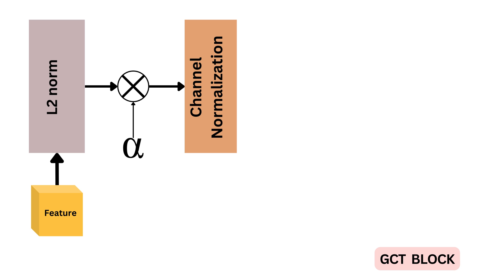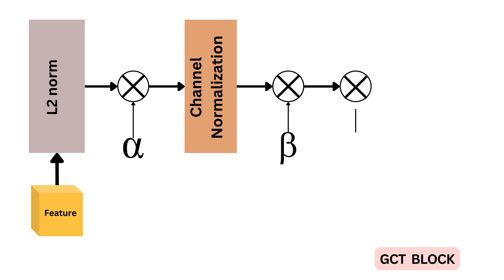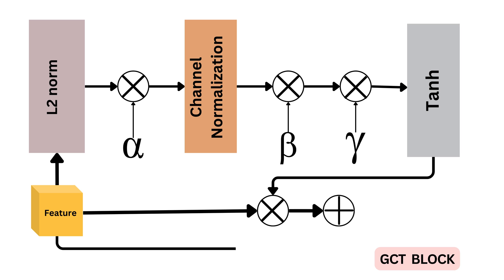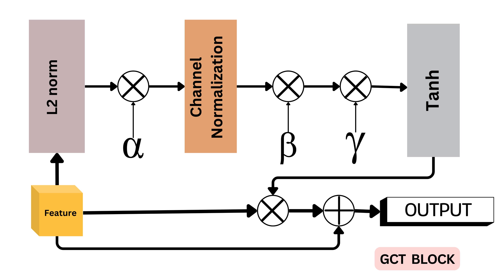In line with common normalization practices, GCT incorporates a learnable scale parameter gamma and bias beta to rescale the normalization. Notably, GCT sets itself apart by utilizing tanh activation to govern the attention vector, adding a nuanced control element. In its final steps, GCT not only multiplies the input by the attention vector but also includes an identity connection, contributing to the model's robustness and preserving essential information during transformations. This distinctive approach makes GCT a compelling alternative for efficient channel attention in deep learning architectures.